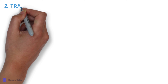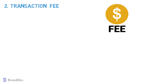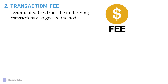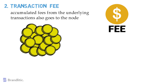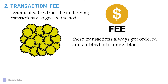Second, transaction fees: in addition to staking rewards, each transaction carries with itself a small fee, making it easier for the node to prioritize the selection of transactions to be entered into the block. The accumulated fees from the underlying transactions also go to the node. Transactions vary from token transfers to smart contract executions, and despite the dissimilarity in transaction types, they always get ordered and clubbed into a new block so that all nodes in a network can agree on the state of the network.